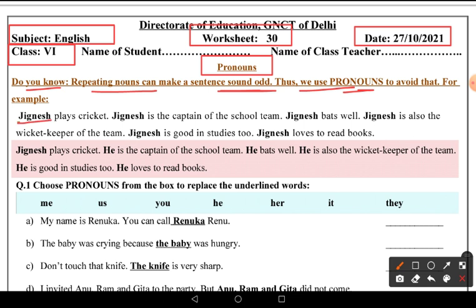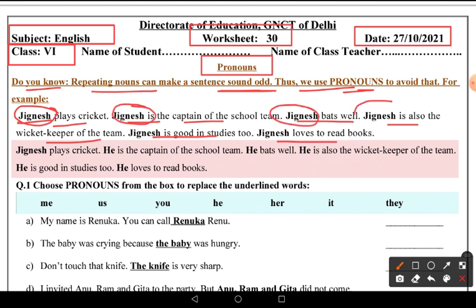Jignesh plays cricket. Jignesh is the captain of the school team. Jignesh bats well and Jignesh is also the wicket keeper of the team. Jignesh is good in studies too and Jignesh loves reading books. So now we see how many times the name Jignesh is repeated — one, two, three, four, five, six times — and it sounds very strange.